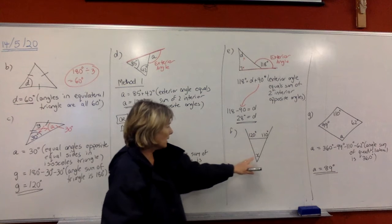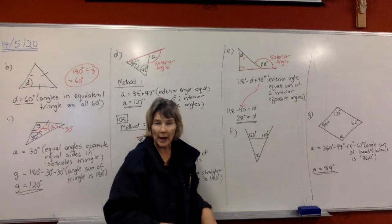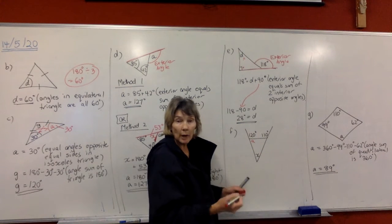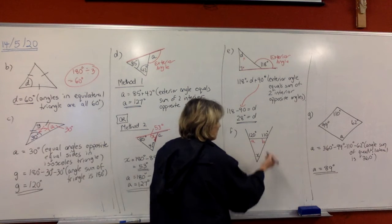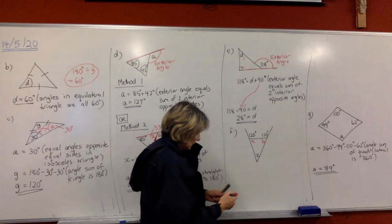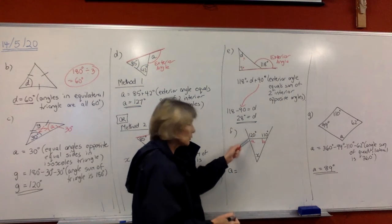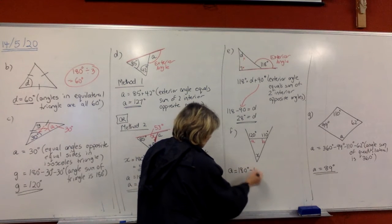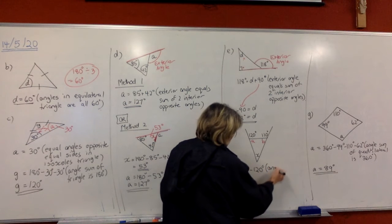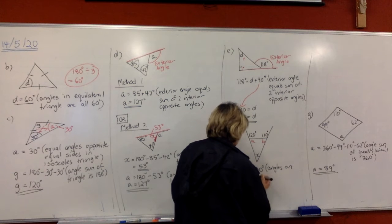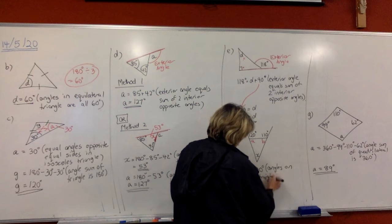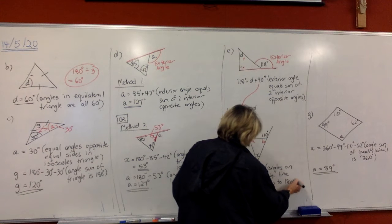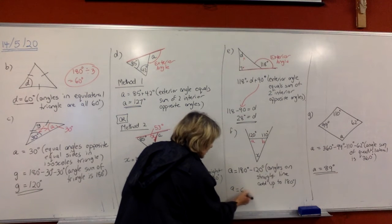In F, you can't get the answer straight away and can't use the exterior angle rule, so we have to find intermediate angles. Call one A in red. These two angles are on a straight line, so they add up to 180: do 180 minus 120. The reason: angles on a straight line add up to 180 degrees. Using the calculator, A equals 60 degrees.